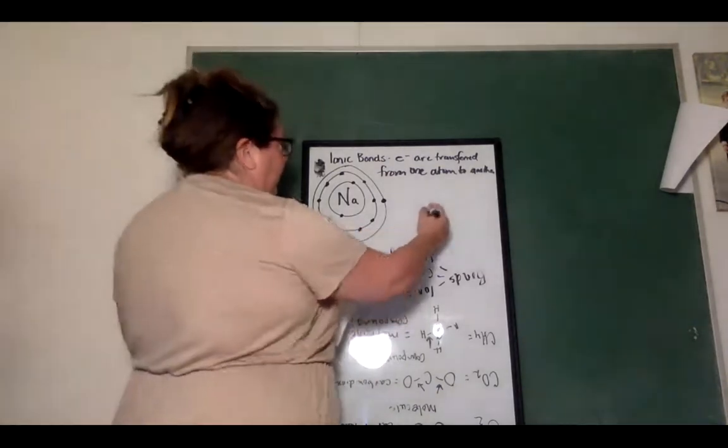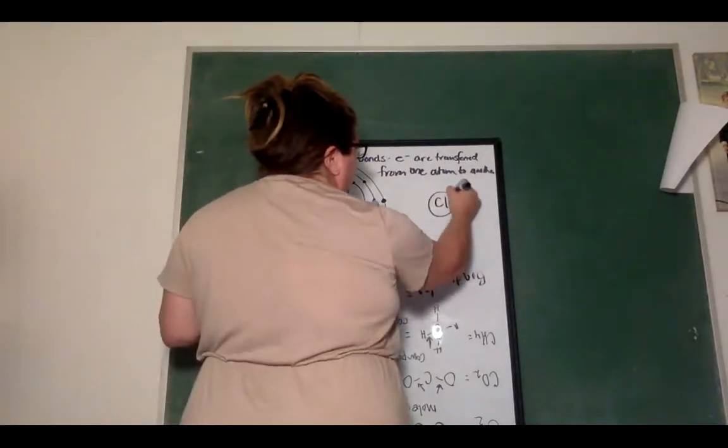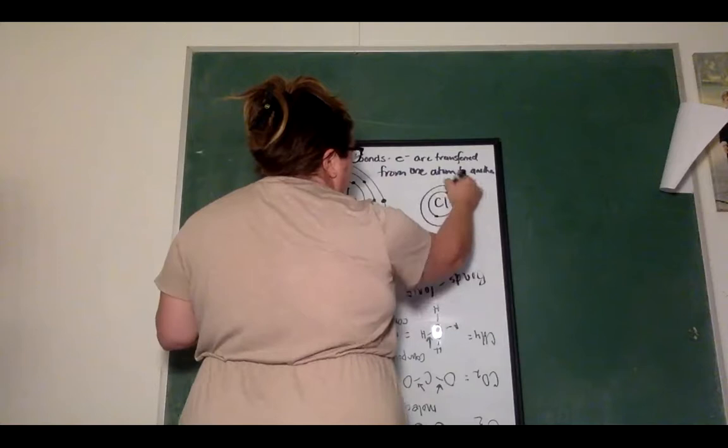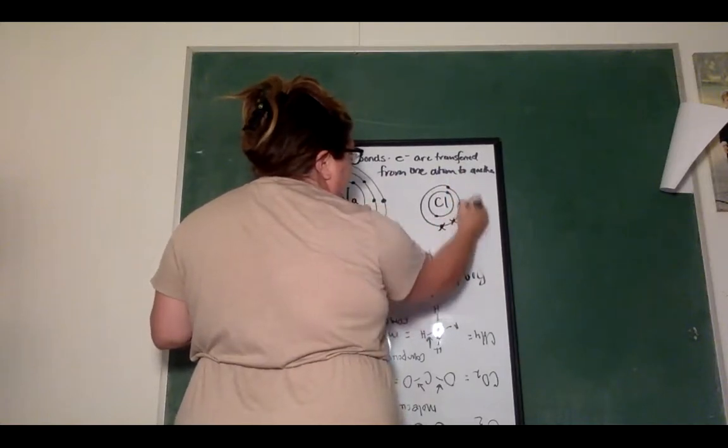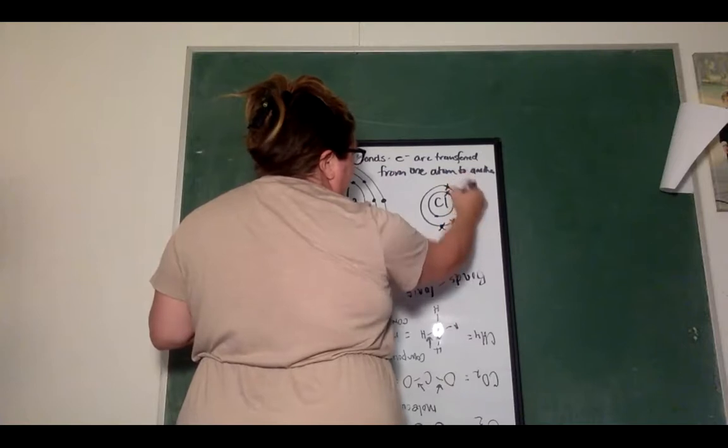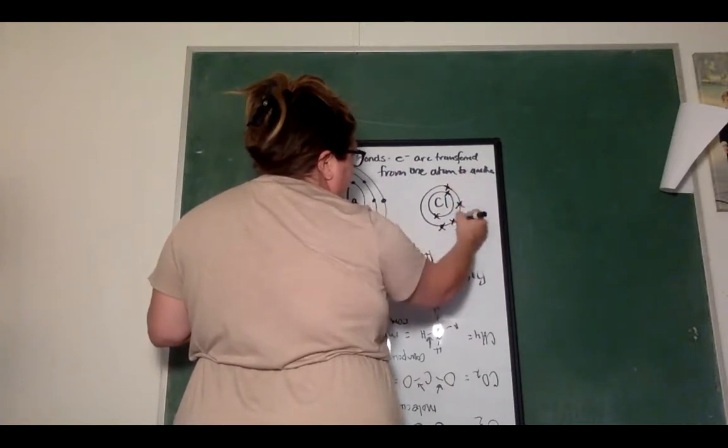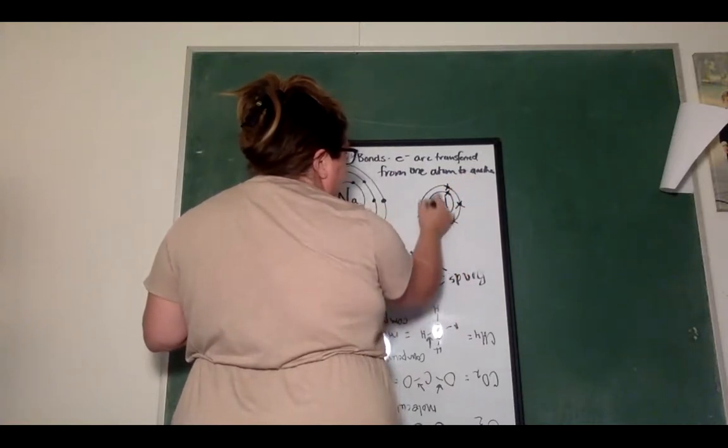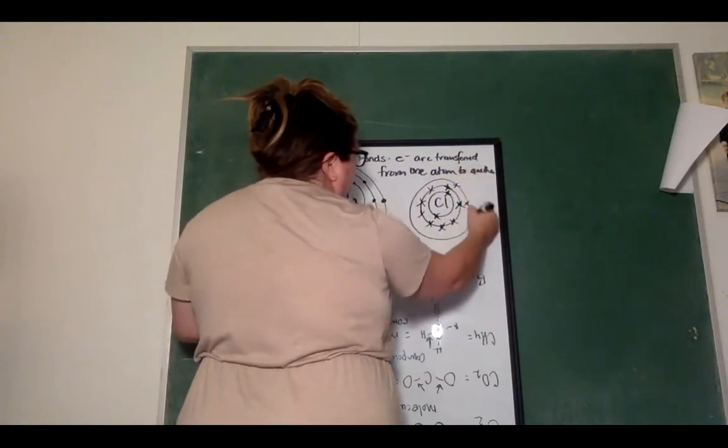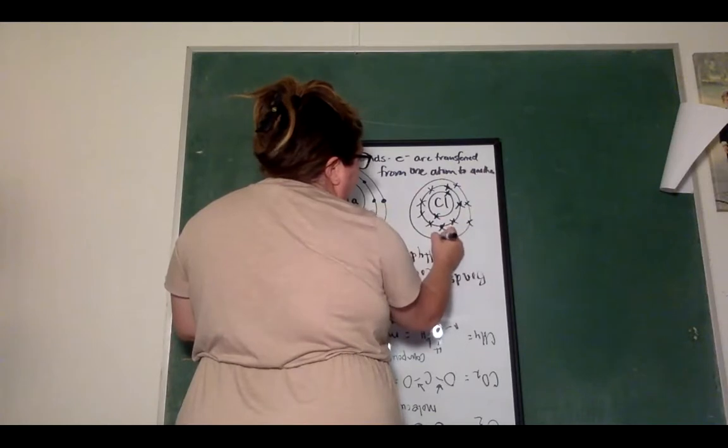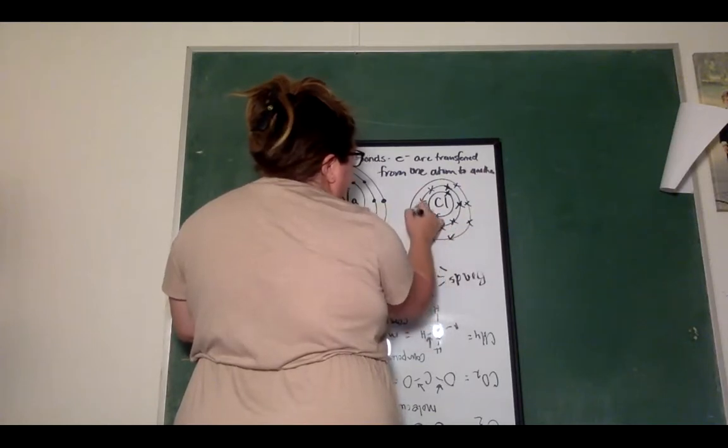Then if I have chlorine, 2 on the 1st, 8 on the 2nd, I'm going to make these X's so that you can keep up with them. 1, 2, 3, 4, 5, 6, 7, 8. 1, 2, 3, 4, 5, 6, 7.